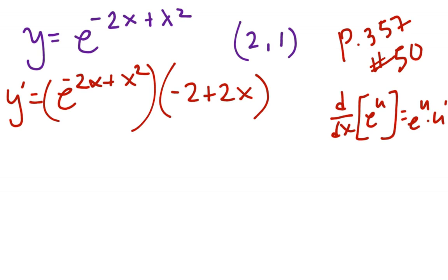Alright, I don't care what this looks like, I'm going to just leave it as is and I'm going to plug in 2. Because I need to find the slope at 2. And when I do that, 2 goes in for x here and I get negative 4 plus 4 gives me 0.